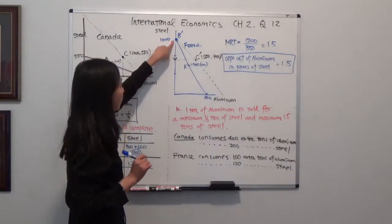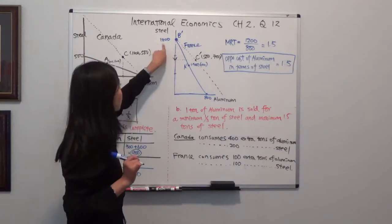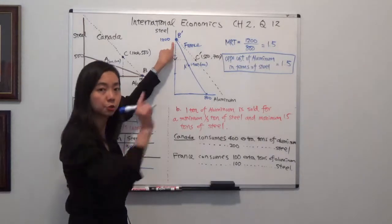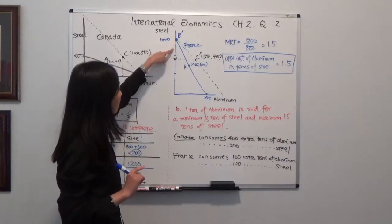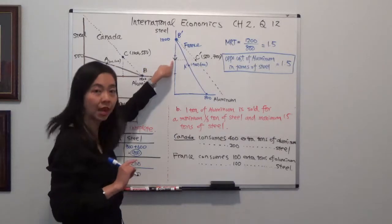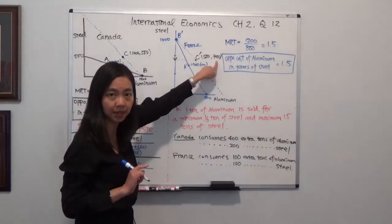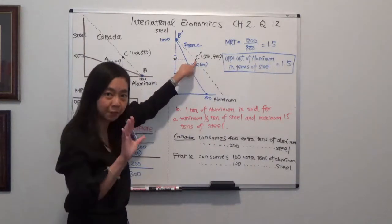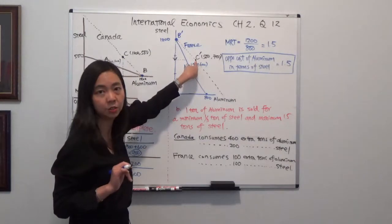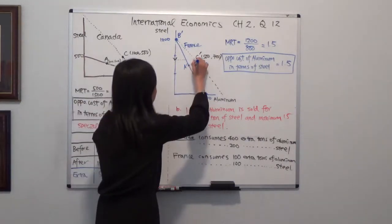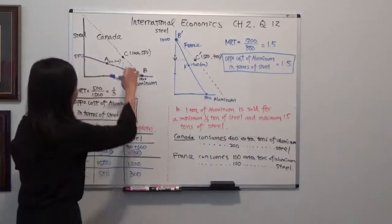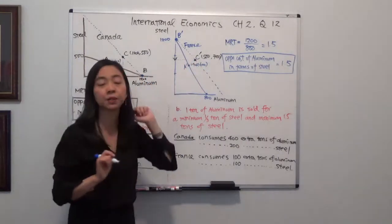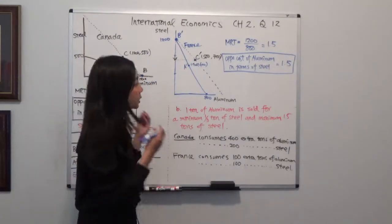For France, they specialize on steel only and produce 1200 tons of steel. They export 500 tons of steel to Canada, leaving 700 tons of steel, and import 500 tons of aluminum from Canada. So France ends up consuming 500 tons of aluminum and 700 tons of steel, marked as point C prime. Both countries are consuming outside their production possibility curve, which tells us they both benefit from trade.